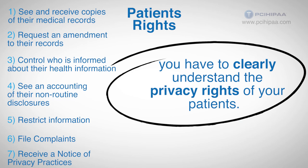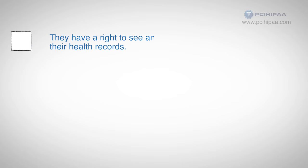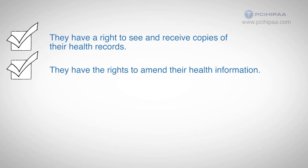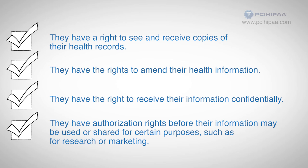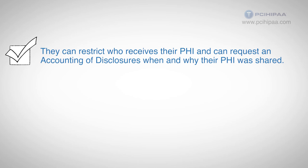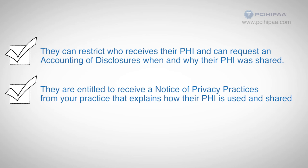In summary, you have to clearly understand the privacy rights of your patients. As a general rule, they have a right to see and receive copies of their health records. They have the right to amend their health information. They have the right to receive their information confidentially. They have authorization rights before their information may be used or shared for certain purposes, such as for research or marketing. However, they can restrict who receives their PHI, and can request an accounting of disclosures — when and why their PHI was shared. And finally, they are entitled to receive a notice of privacy practices from your practice that explains how their PHI is used and shared.